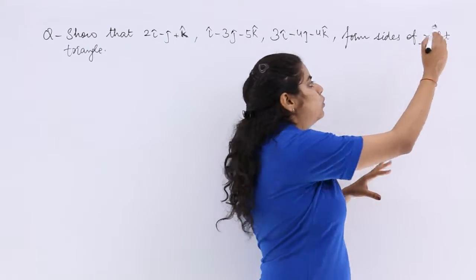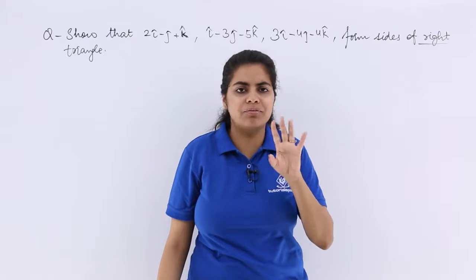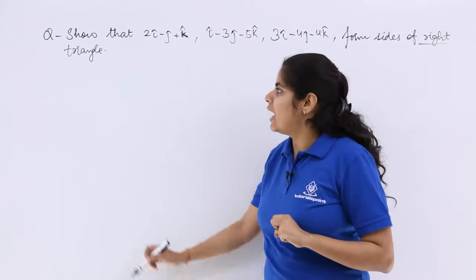Right triangle is what kind of a triangle? Whose angle is 90 degrees. One of the angles should be 90 degrees. So let's see how to do it.